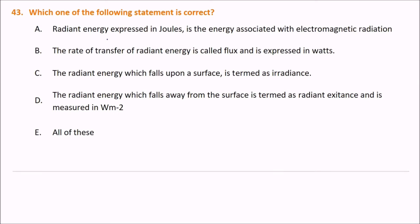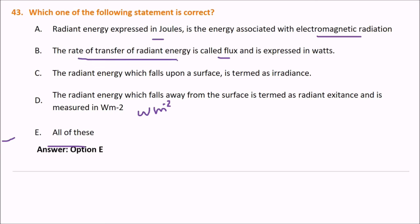Which statement is correct about radiant energy units? The answer is all are correct: radiant energy is expressed in joules; the rate of transfer of radiant energy is called flux and is measured in watts; the radiant energy falling upon a surface is termed irradiance; and the radiant energy leaving a surface is called radiant exitance, measured in W·m⁻².